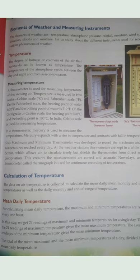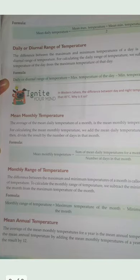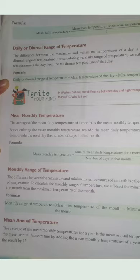The daily or diurnal range of temperature means we subtract the minimum from the maximum. For example, if the minimum temperature is 20°C and the maximum temperature is 35°C in a day, we subtract 20 from 35 and that difference is called the diurnal range of temperature.